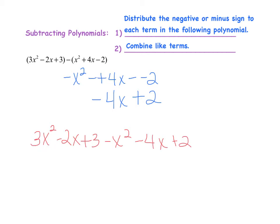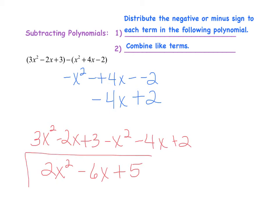I'm now going to rewrite the expression so it's easier to combine like terms. We find both x squared terms and combine them: 3x squared minus x squared equals 2x squared. Then we look at the x terms: negative 2x minus 4x equals minus 6x. And finally, we have 2 constants: positive 3 plus 2 equals plus 5. So we have simplified this to 2x squared minus 6x plus 5.